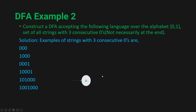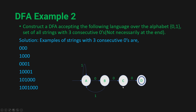In starting state A, if we get 0 we go to B; in B, 0 takes us to C; in C, 0 takes us to D — and state D is our final state. In state A, getting a 1 keeps us in A. In state B, getting a 1 returns us to A. In state C, getting a 1 returns us to A. In state D, getting either 0 or 1 keeps us in D, because we've already seen three consecutive zeros.